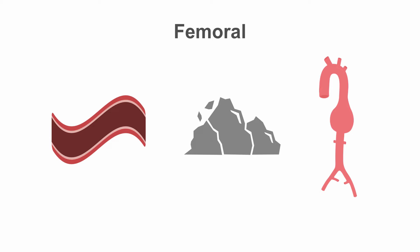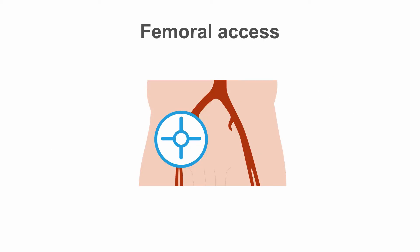Ideally the common femoral artery should be punctured above the bifurcation and over the medial head of the femur to allow it to be compressed or closed as required. Unless you image with ultrasound before gaining access and perform a femoral angiogram, it's not possible to know where this is accurately. The maximal pulsation is normally felt where the common femoral artery is compressible against the medial head of the femur, and this is usually also the safest place to cannulate.